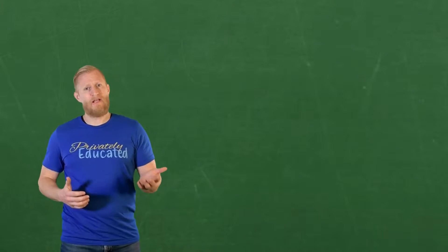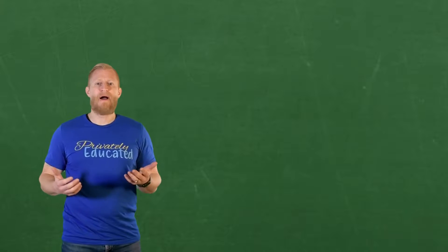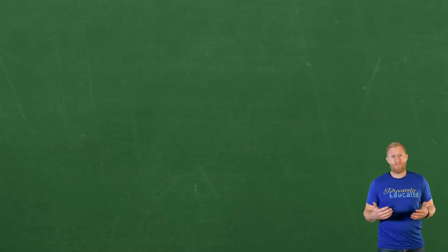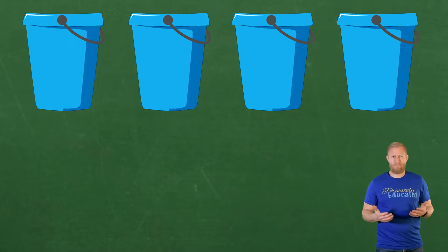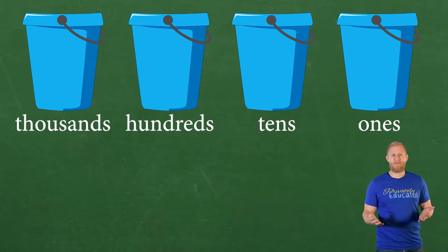So let's talk a little more about place value groups. We'll just start with the place values, or buckets, we talked about in the last video: the ones, tens, hundreds, and thousands.